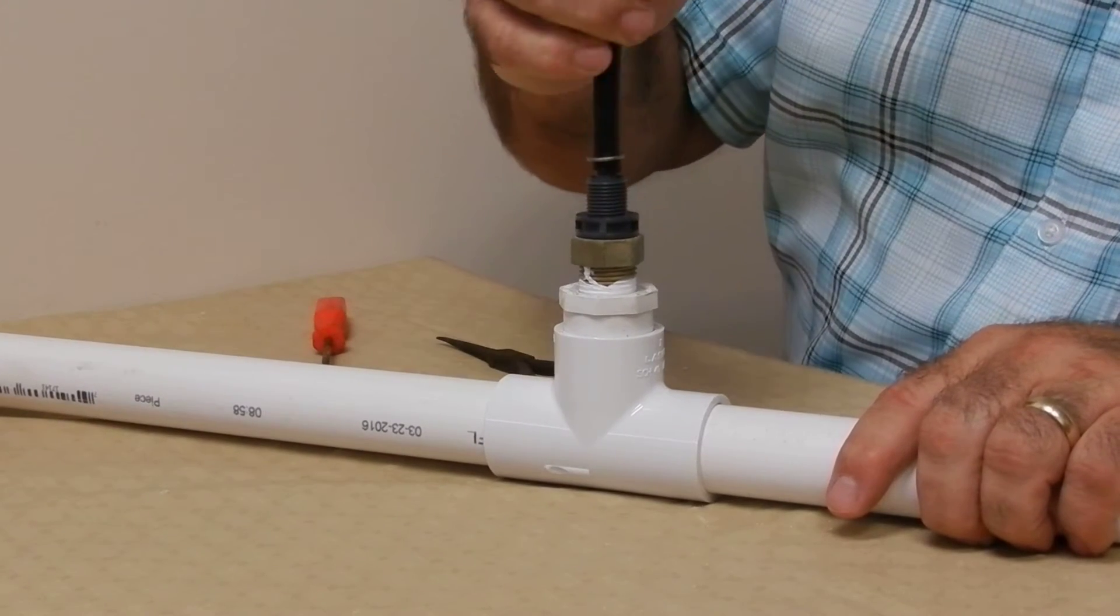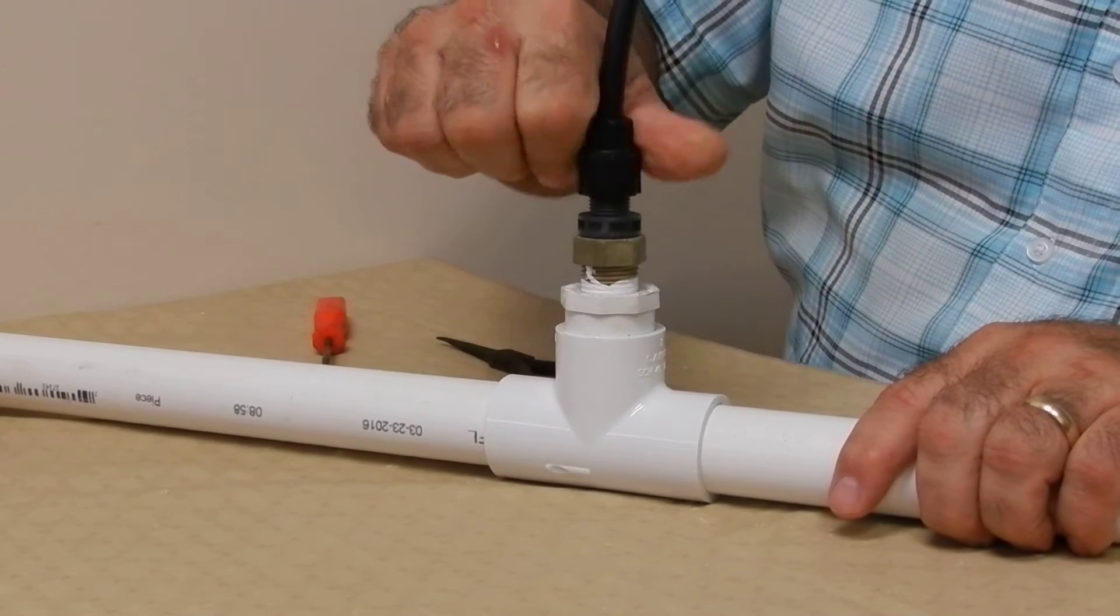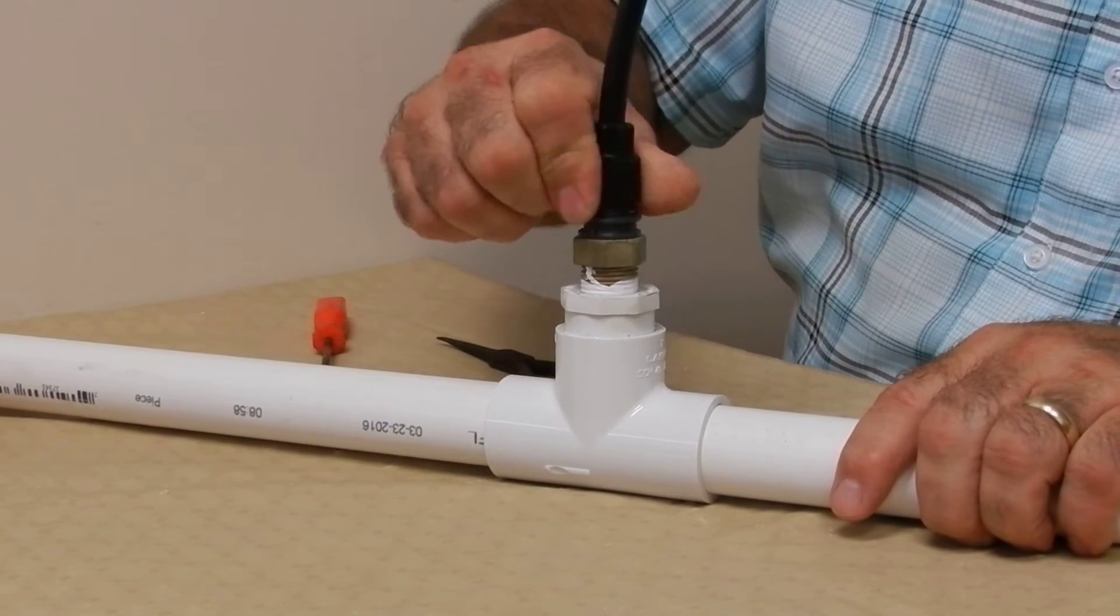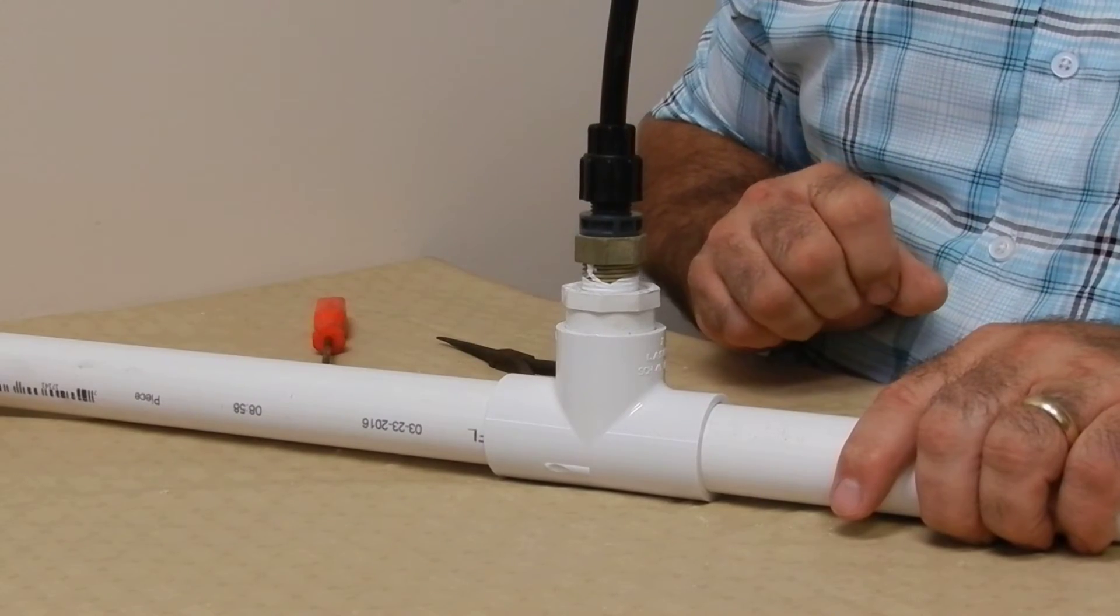Replace the hose, push down tight, make sure your metal ring is there, tighten the nut hand tight only, no pliers, turn the water on and turn on the pump.